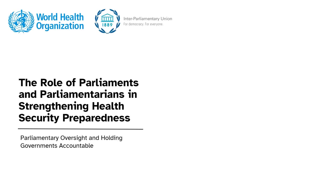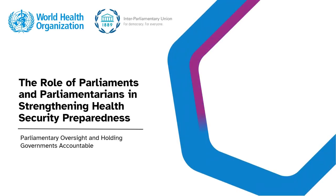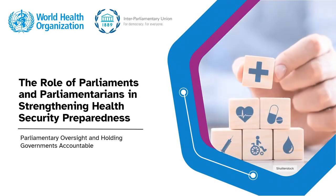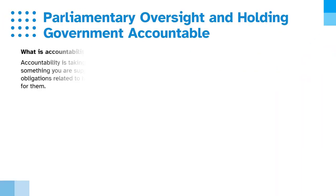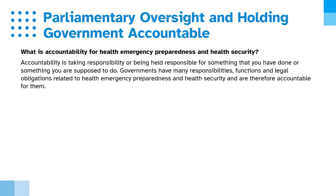Module 3: Parliamentary Oversight and Holding Governments Accountable. What is accountability for health emergency preparedness and health security? Accountability is taking responsibility or being held responsible for something that you have done or something that you are supposed to do.